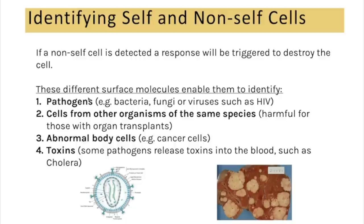The surface molecules enable identification of pathogens such as bacteria, fungi and viruses, cells from other organisms of the same species (relevant in organ transplants), abnormal body cells such as cancer cells, and toxins released by pathogens like the bacterium cholera. An antigen is a molecule that generates an immune response by triggering lymphocytes. Antigens are usually proteins located on the surface of cells.